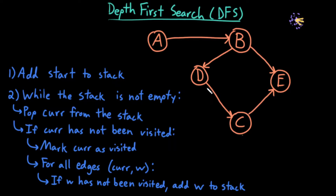Here's an example graph — let's perform a depth first search starting at node A. The algorithm goes as follows: first we add our starting node to a stack. I'll be drawing my stack over here and erasing elements as I pop them off. So A gets added to my stack — A has been added.